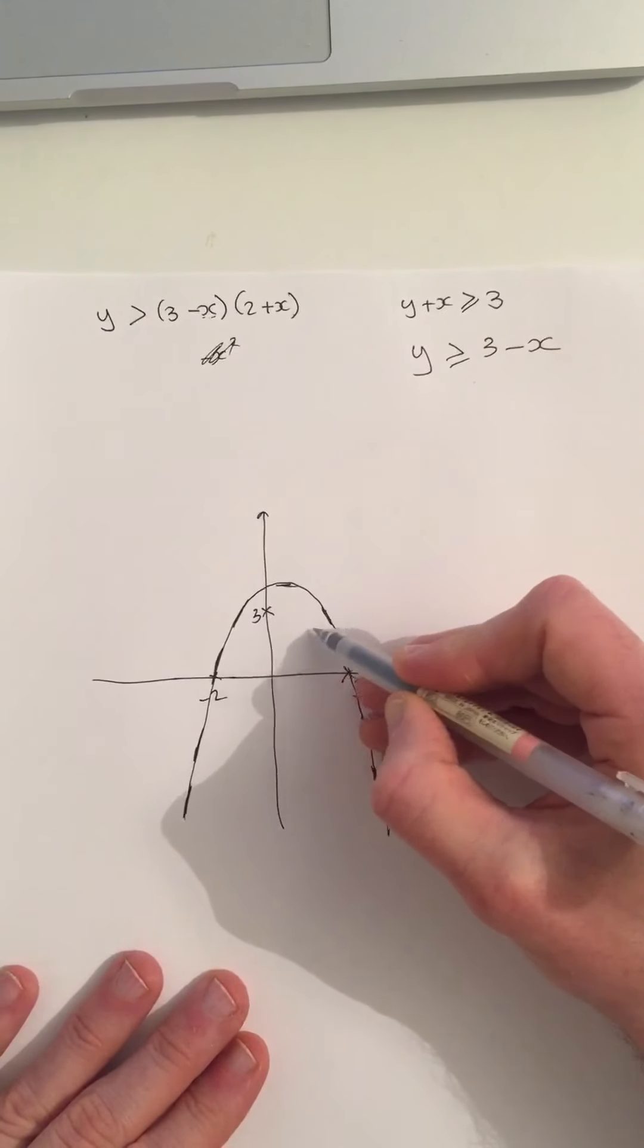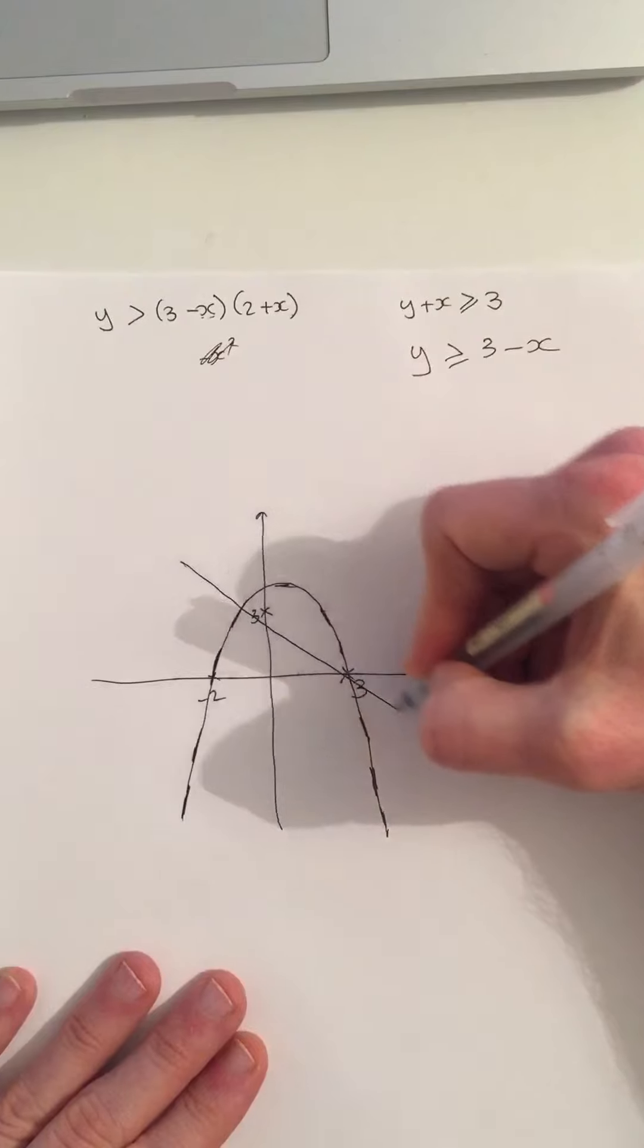Along one, down one, along one, down one, along one, down one. It's basically going to look something like that.